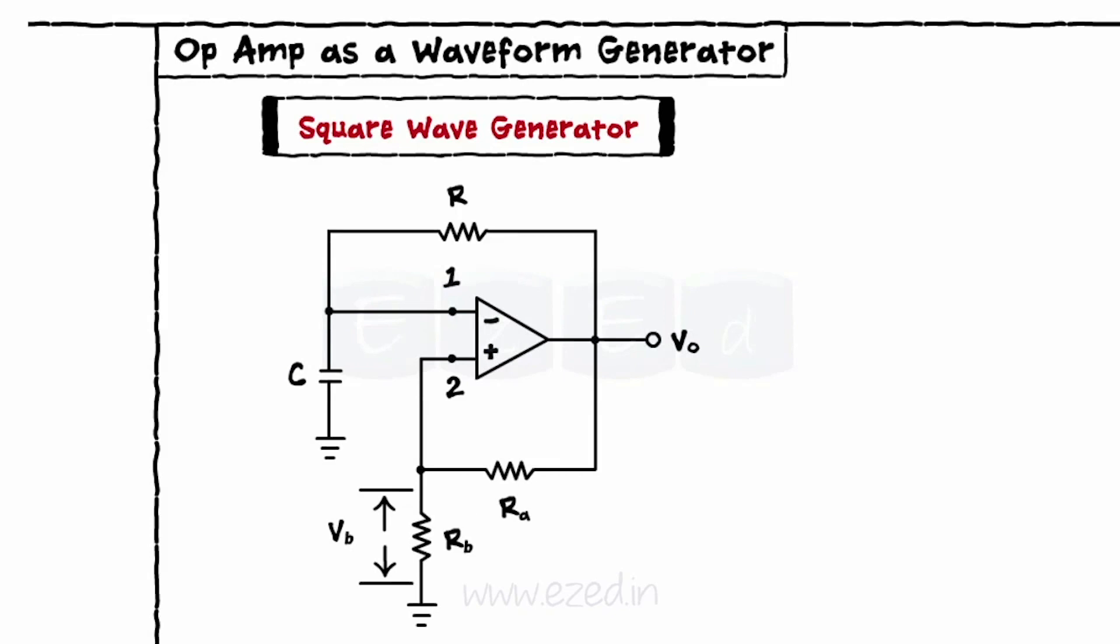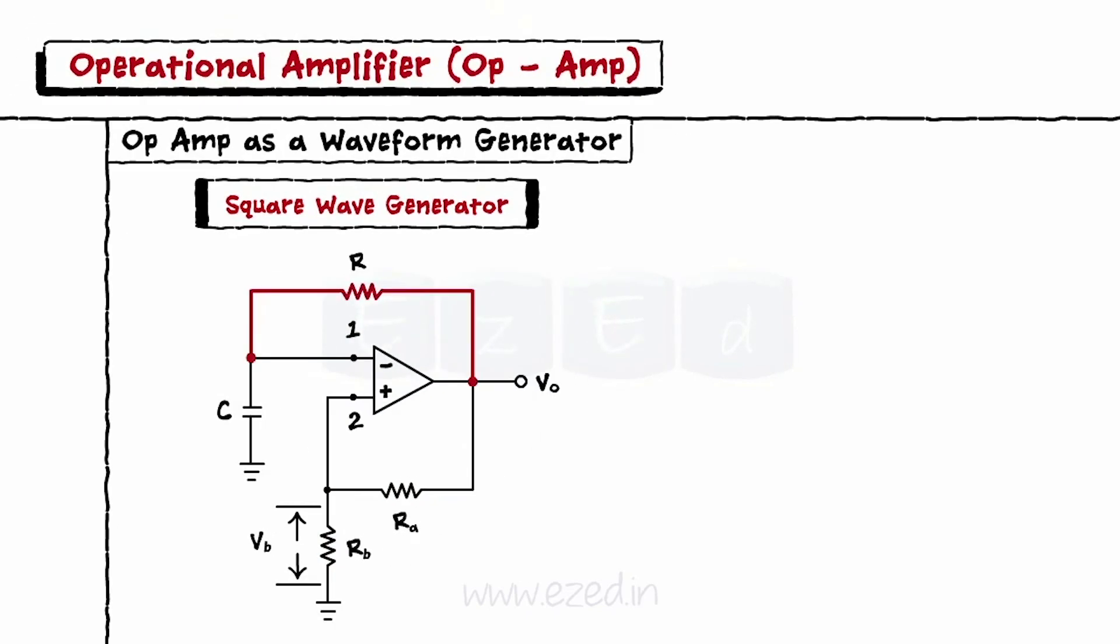As we can see, a capacitor C is connected to an inverting terminal and resistances RA and RB are connected to a non-inverting terminal. Resistor R is connected as a negative feedback to the inverting terminal forming the RC circuit.